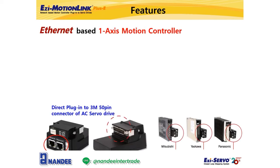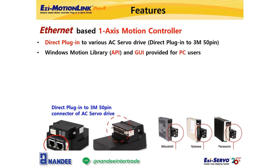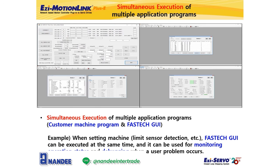Let's summarize the features of EZMotionLink. EZMotionLink Plus E is an Ethernet-based one-axis motion controller for AC servo. It can be used by plugging it into the interface connector of the AC servo drive. Since most AC servo drives use the 3M 50-pin connector, you can easily connect EZMotionLink to various AC servo drives such as Mitsubishi, Yaskawa, and Panasonic. Windows-based API and GUI are provided for PC users. You can run multiple applications at the same time — for instance, monitoring parameter values, I/O status, position values, speed values, etc. using our GUI program even when the customer's machine program is running. For example, you can check whether the limit sensor works properly during machine setting by running our GUI at the same time.